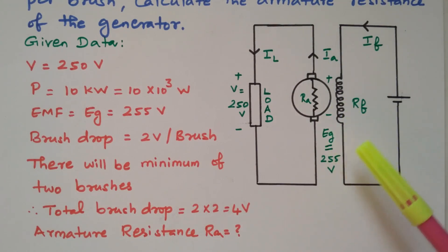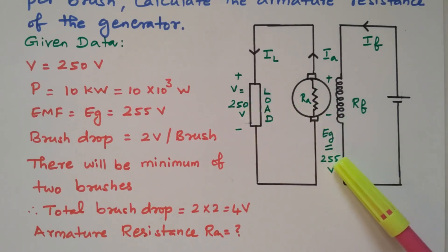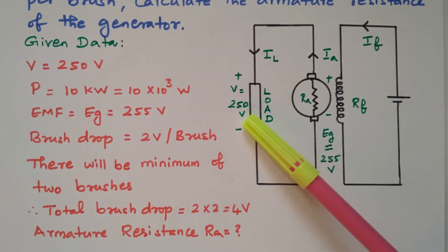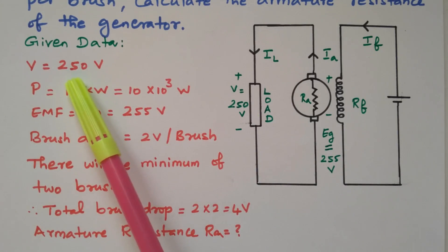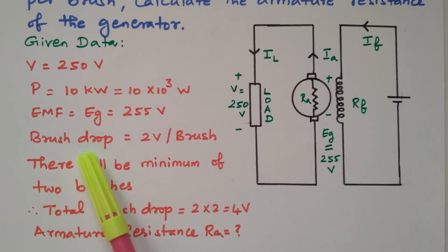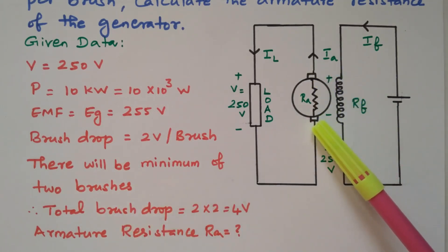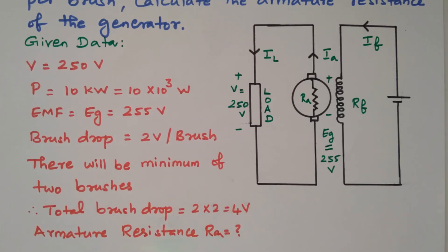The generated EMF is given as 255 volts and the terminal voltage available at the load is 250 volts. The output power is 100 kilowatts. The brush drop is 2 volts per brush. There are a minimum of 2 brushes, so the total brush drop is 2 volts × 2 brushes = 4 volts. Our aim is to find the resistance Ra.